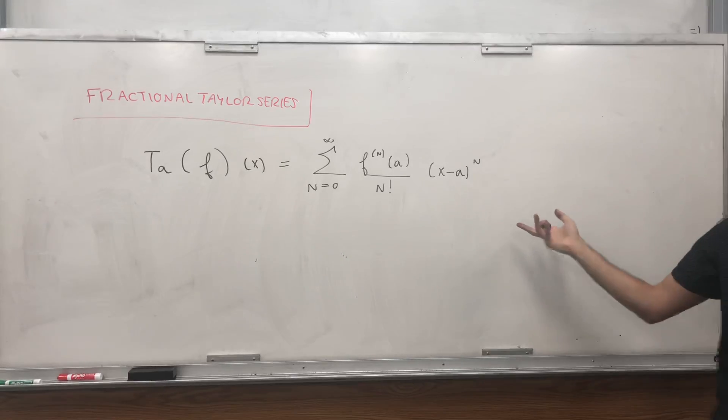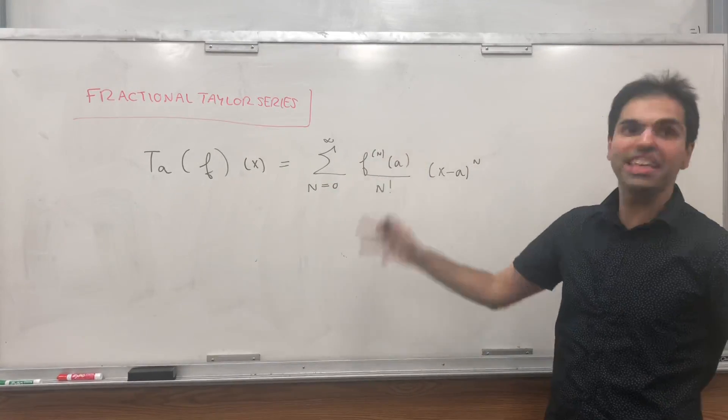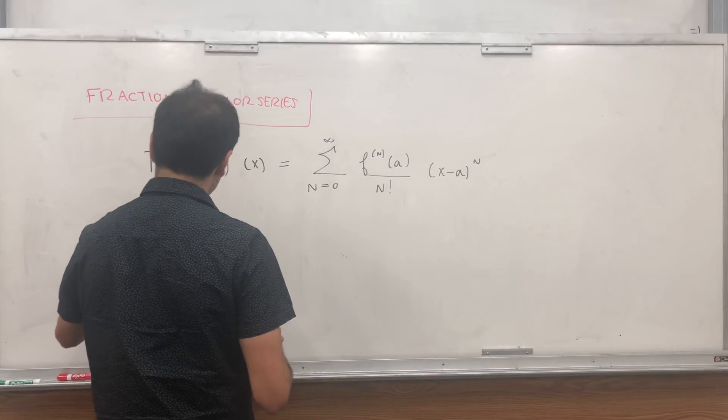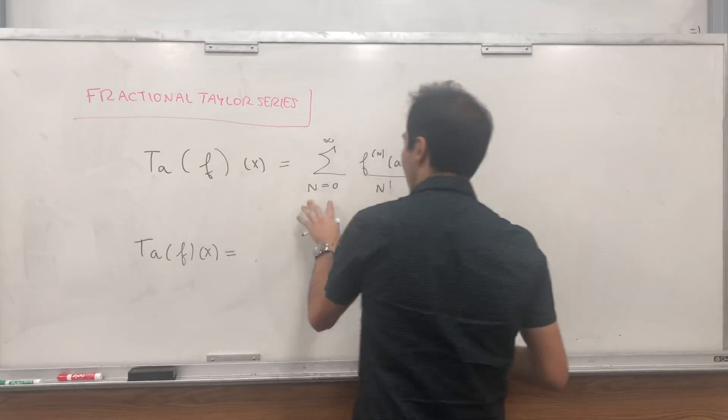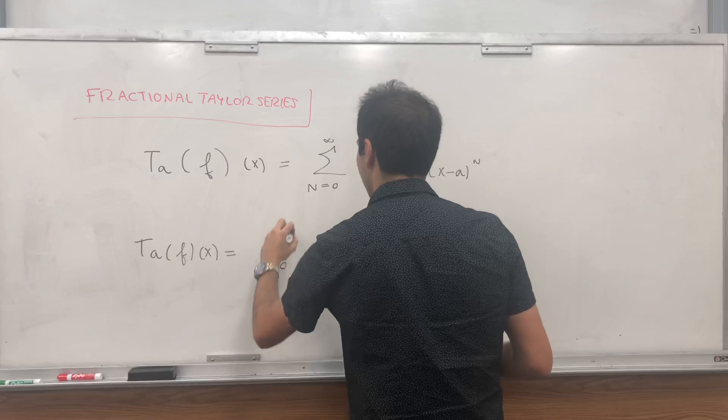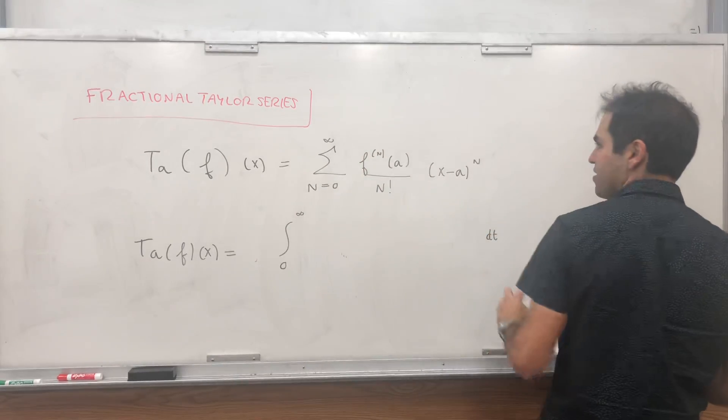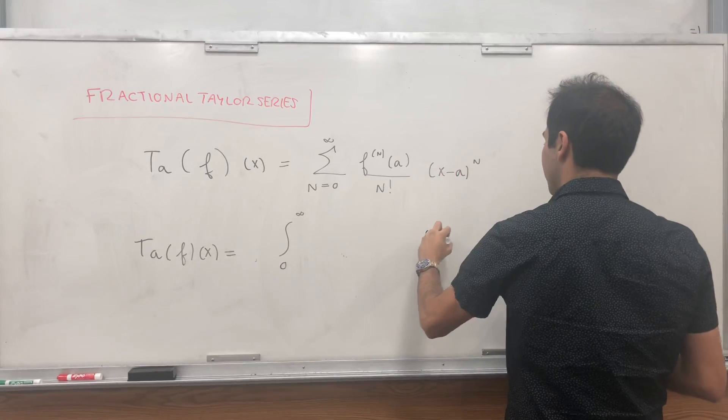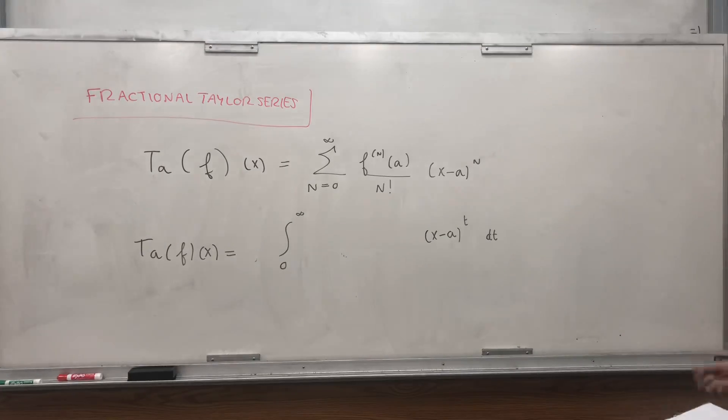And it turns out, again, just formally, there is a continuous analog of this, which is as follows. Well, a sum will probably become an integral. So integral from 0 to infinity, and we're integrating over t. Something dt. x minus a to the n becomes x minus a to the t. So far, so good.